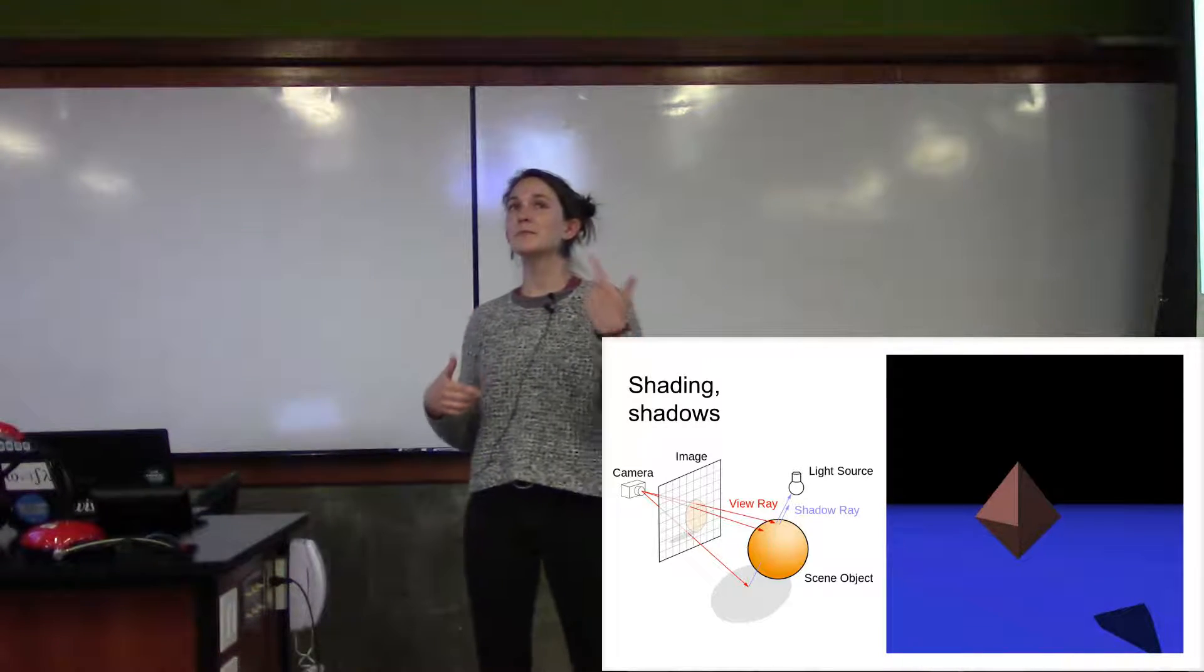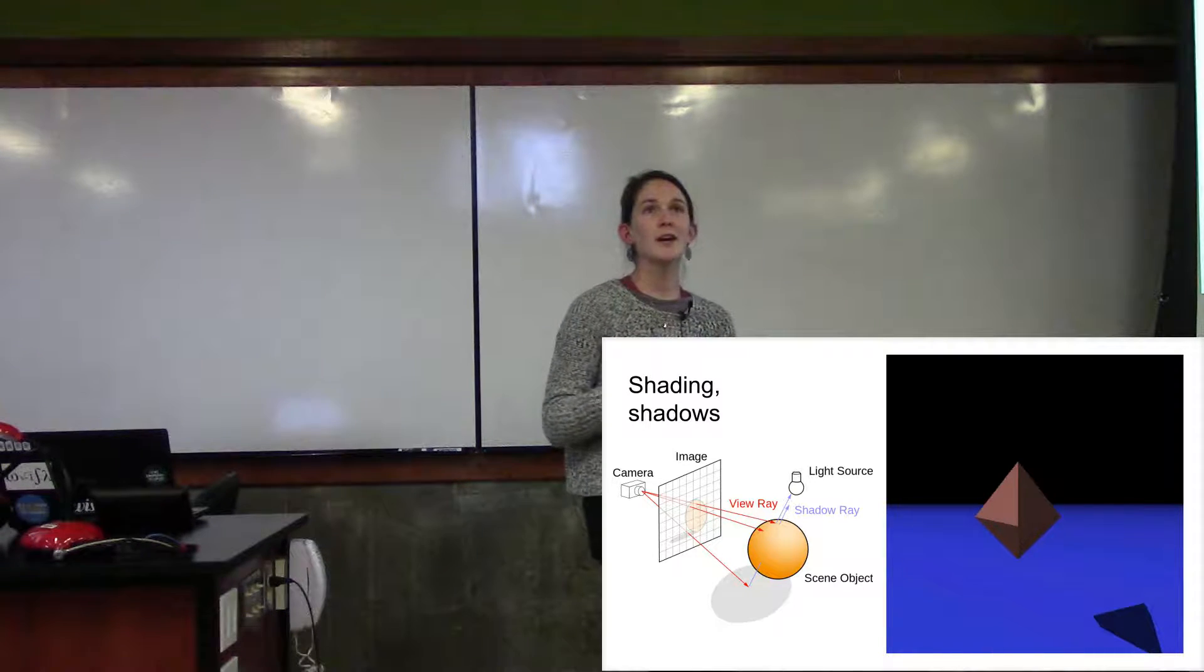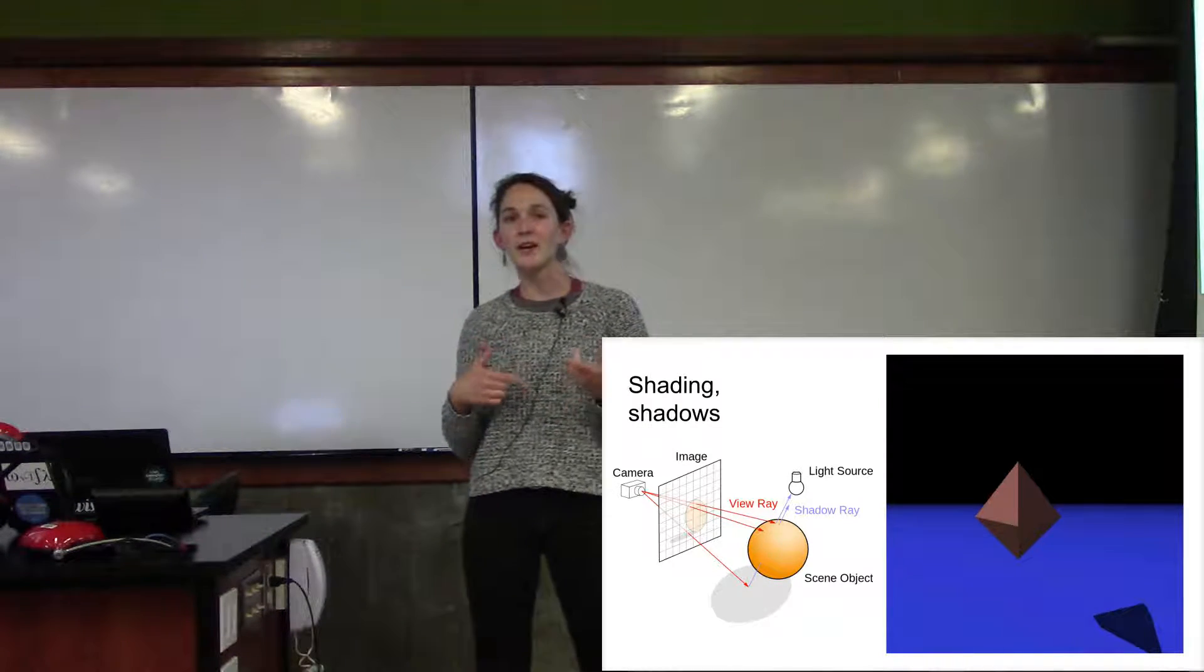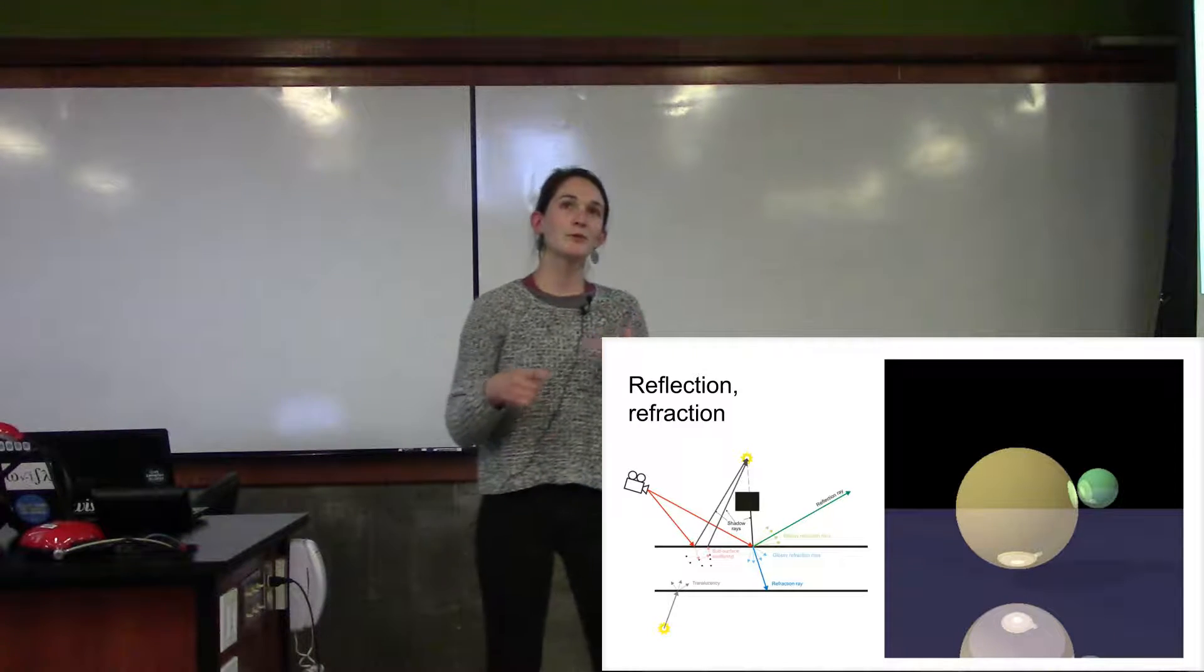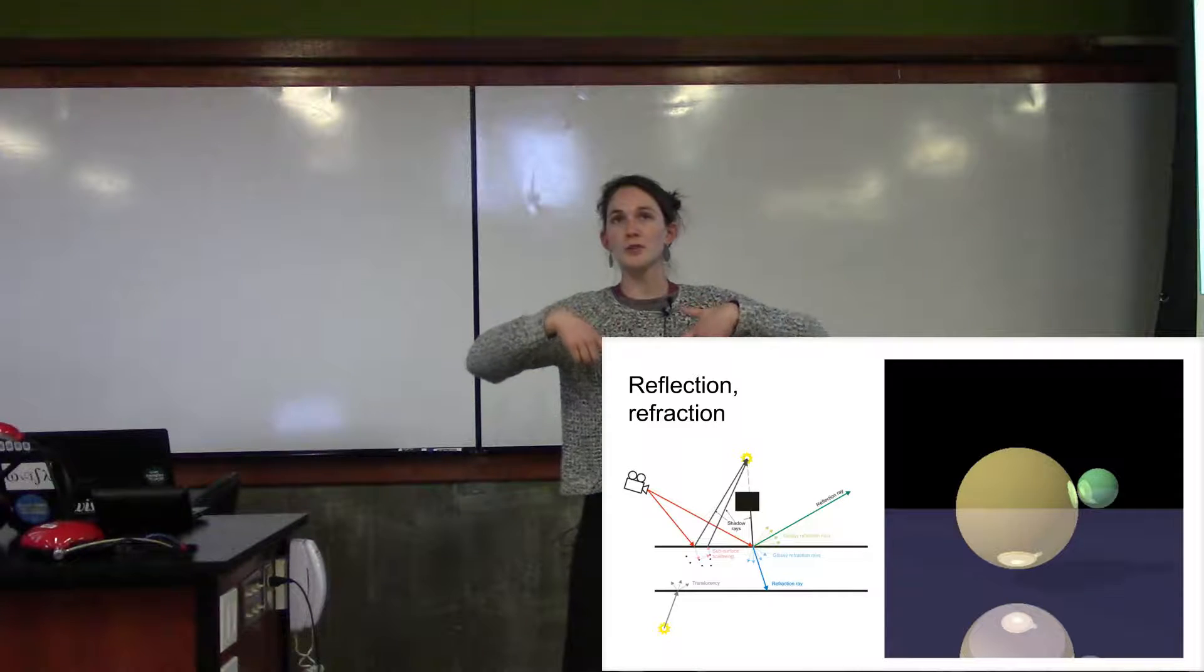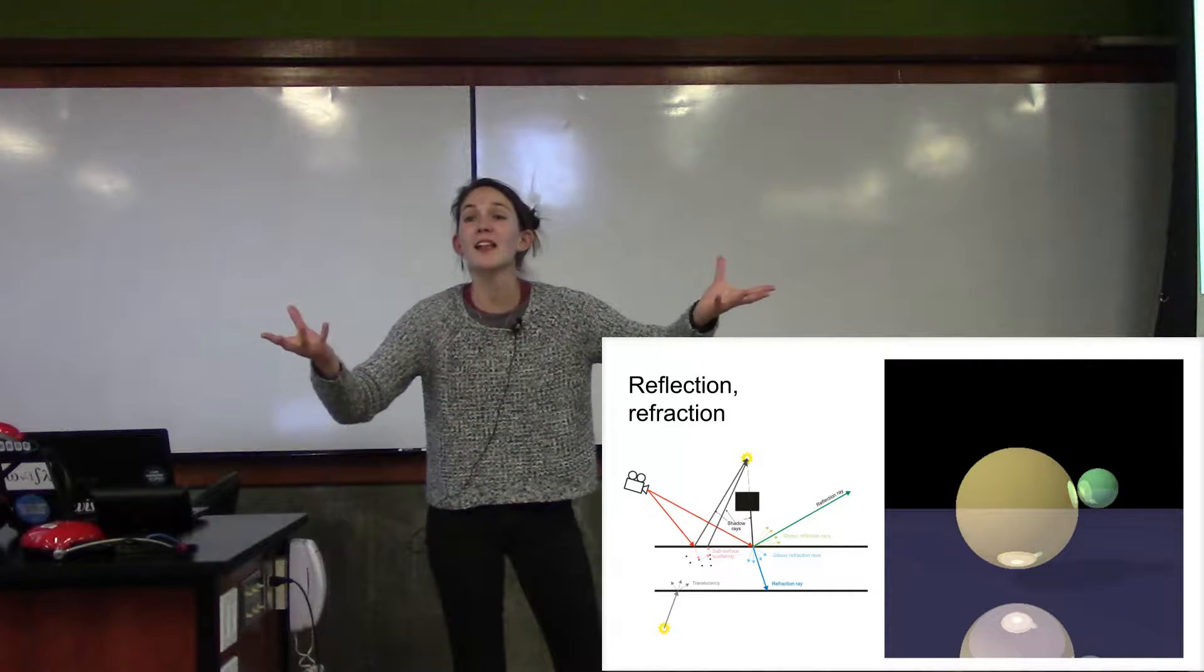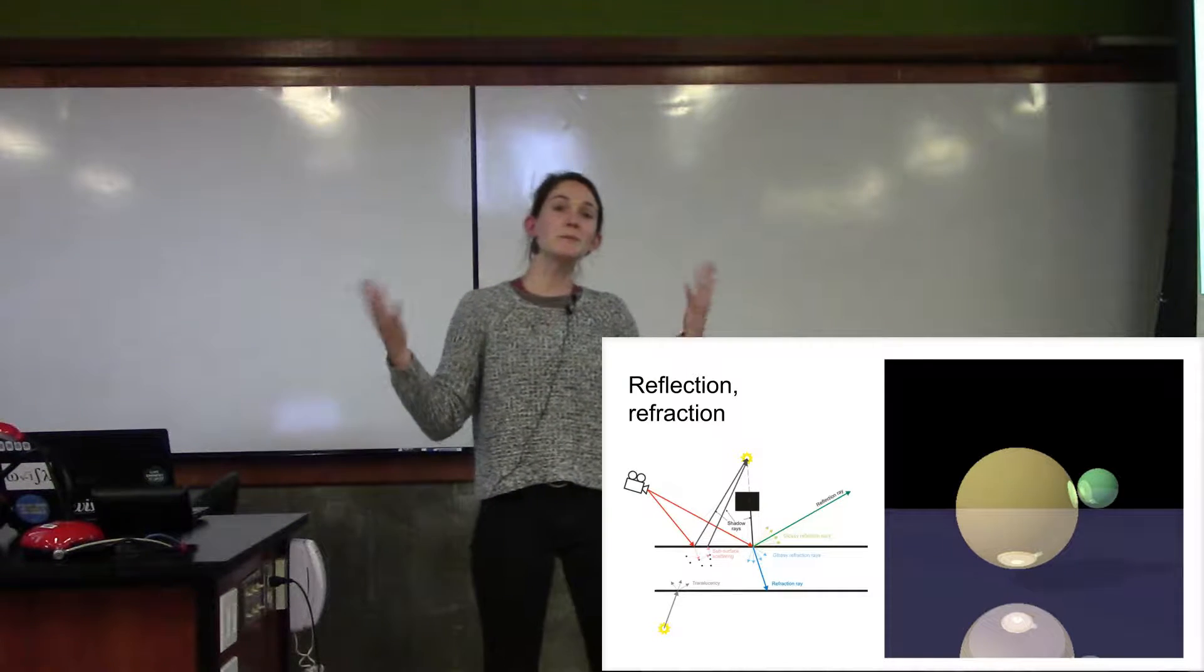Okay. I'm going to keep making my model, my process more complicated. So maybe I want my objects to be reflective. Maybe I want them to be refractive. So like maybe when light goes through my objects, maybe I want the light to, maybe the objects are made of glass. Maybe the objects are going to be mirrors later.